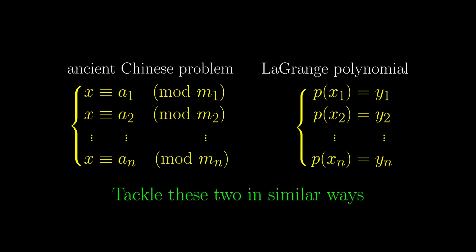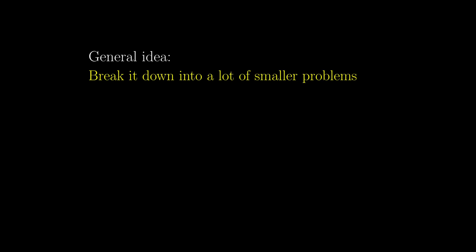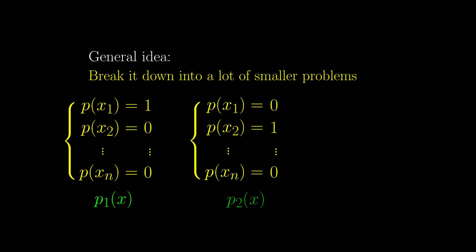However, we can tackle these two in similar ways, which is the connection. Let's tackle the polynomial problem on the right first, because it is actually less complicated. The general idea is to first tackle a lot of much simpler cases. Instead of this general case, we solve this case. Let's say we have solved it, and call the polynomial to be p1. Then similarly, we can solve for p2 all the way to pn. Now what Lagrange did was really simple but amazing, so I highly encourage you to pause the video and think about how we can make use of p1 all the way to pn to solve for the general case.